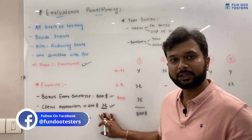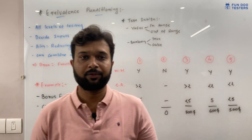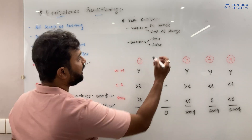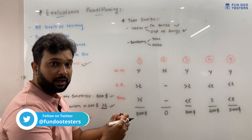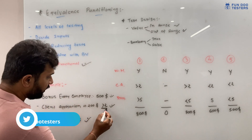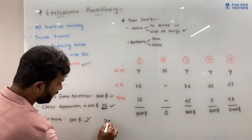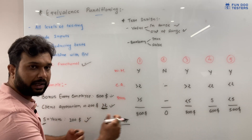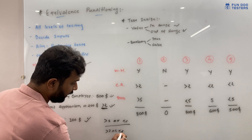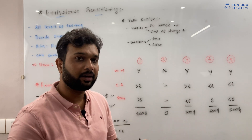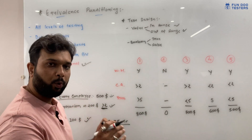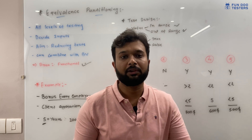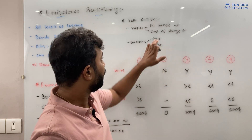First, based on the value, we can design test cases either in range or out of range. For the five-year condition, the range will be: less than five, equal to five, or greater than five. Similarly for client appreciations: less than two, equal to two, or greater than two. Another input is a boolean — whether the employee is currently active or not. If they have resigned and switched companies, we cannot give a yearly bonus, so this is true or false.